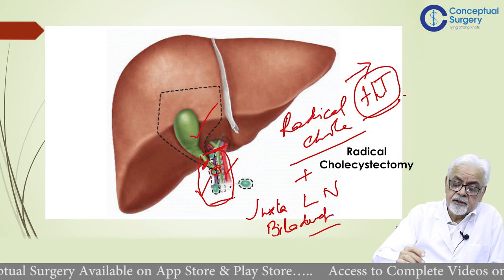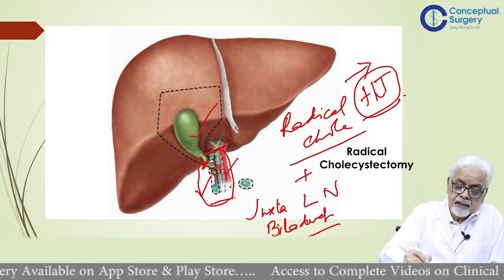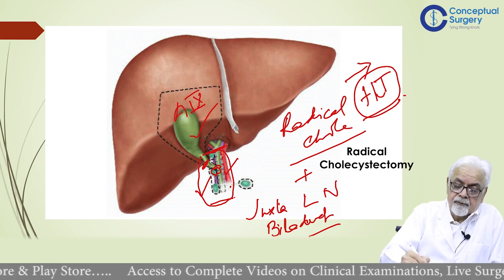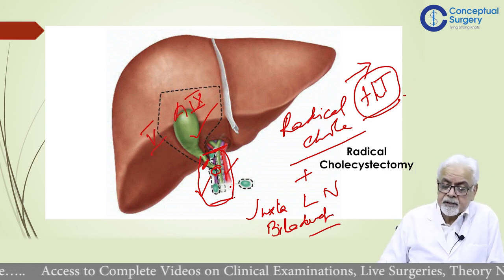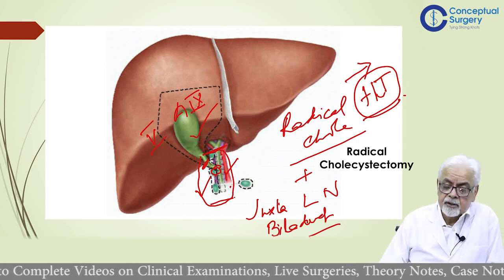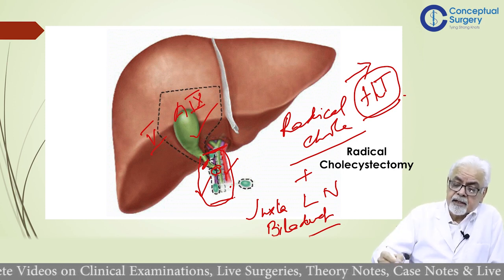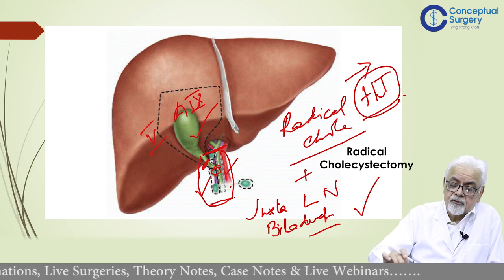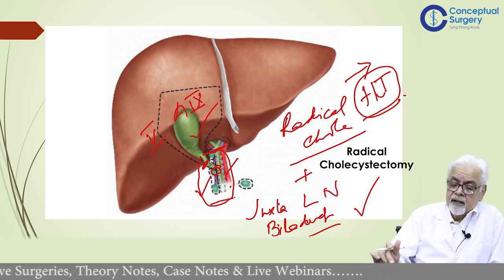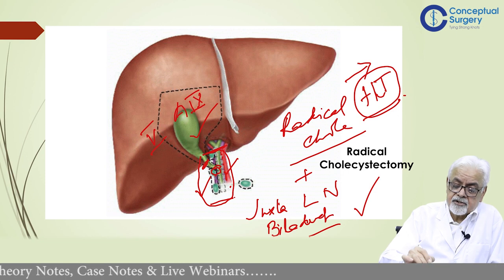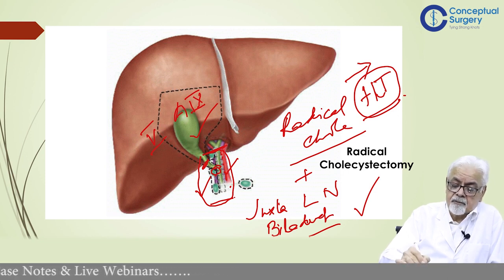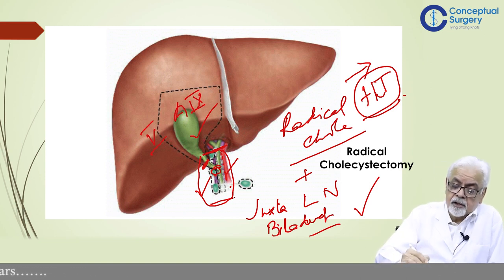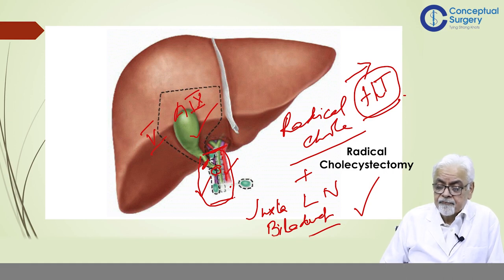What part of the liver do we remove? We remove segments 4A and 5 as part of the cholecystectomy, and that makes it a radical cholecystectomy. With jaundice it would involve removal of the bile duct. Without jaundice it would be a radical cholecystectomy, looking at the cystic duct junction and ensuring there is no spread to the bile duct, terminating the procedure there — but it will always involve removal of the juxta bile duct lymph nodes.